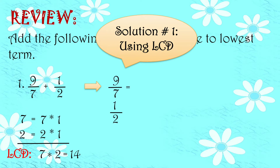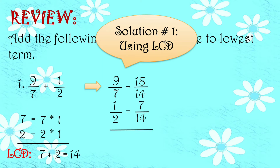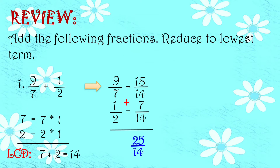Gagamitin na natin yan para maging similar fraction na sila. So si 14, i-divide natin sa 7, at i-multiply natin sa 9 para makuha natin yung numerator. So sagot ay 18. Ganon din sa pangalawang fraction: 14 divided by 2 times 1 is equals to 7. So dahil parehas na sila ng denominator, pwede na tayong mag-add. So 18 plus 7 is equals to 25, and then copy the denominator. So we have 25 over 14.